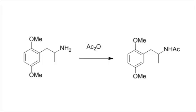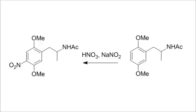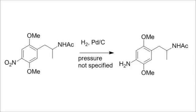First, the amine group of 2,5-DMA was protected with an acetyl group using acetic anhydride. Next, a mixture of concentrated nitric acid and sodium nitrite was used to nitrate the ring, and then the nitro group was reduced all the way down to an amine using a hydrogenation which apparently took three days.